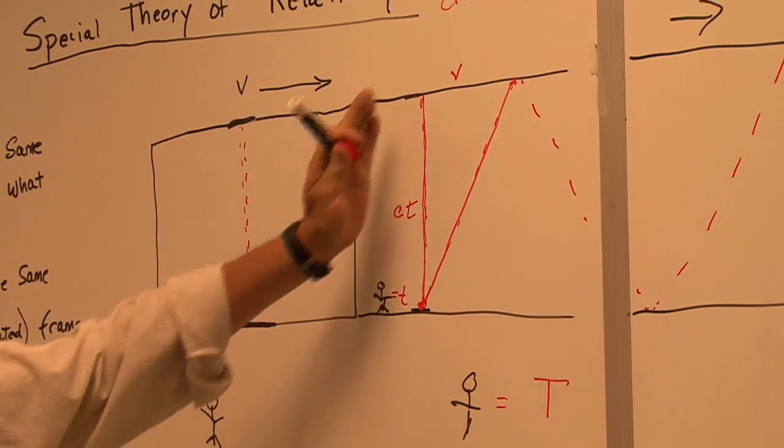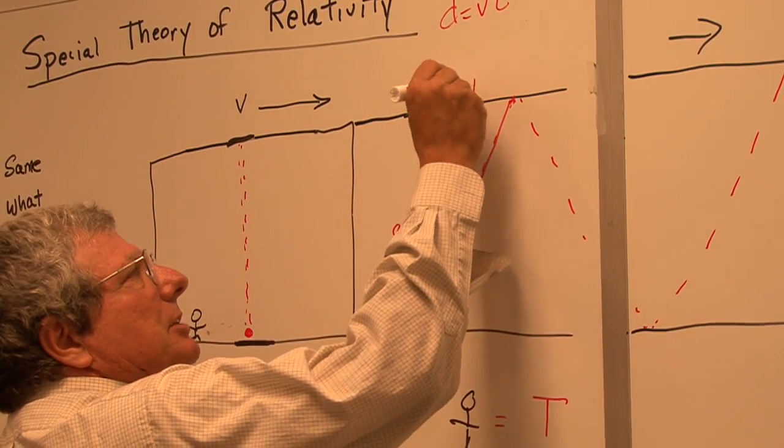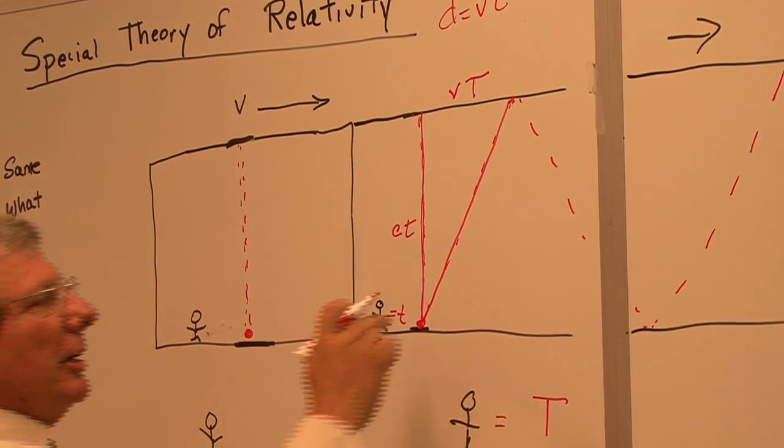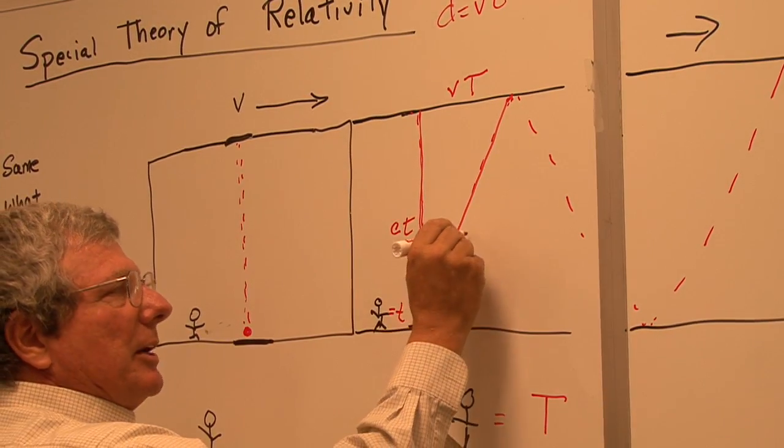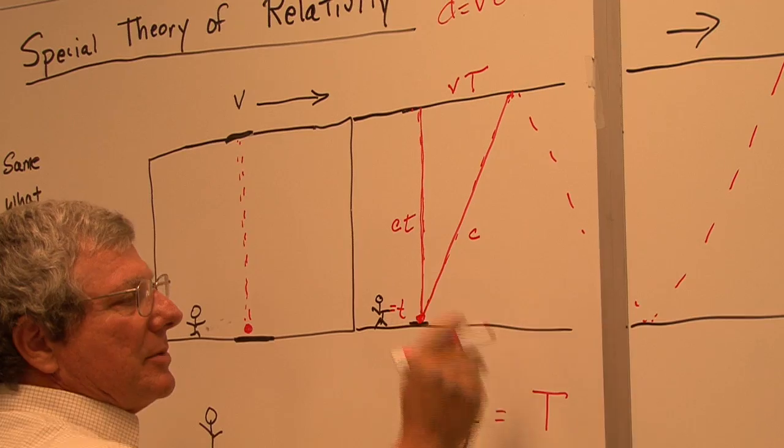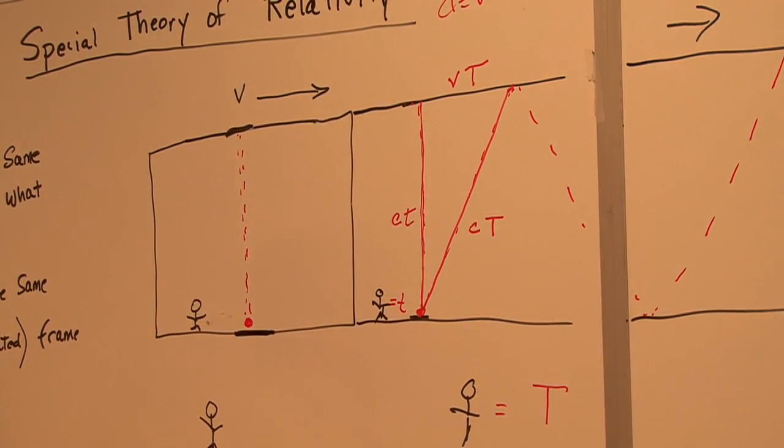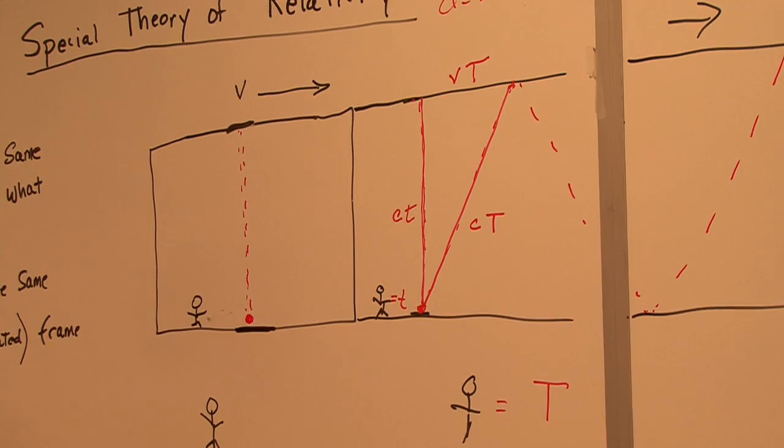This person is seeing a light going like this, and that would be velocity times capital T. And to finish this up, this leg here would be the speed of light times the capital T, the time of the outside observer.